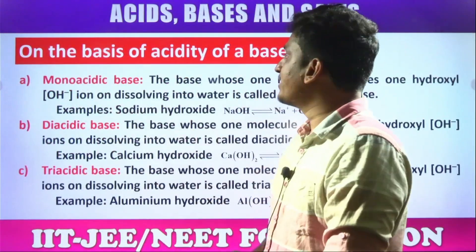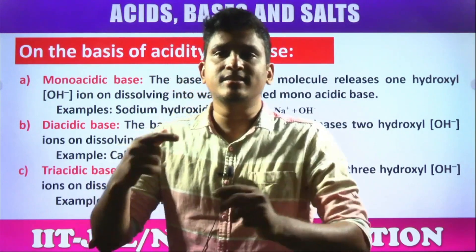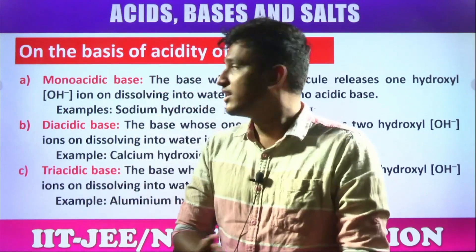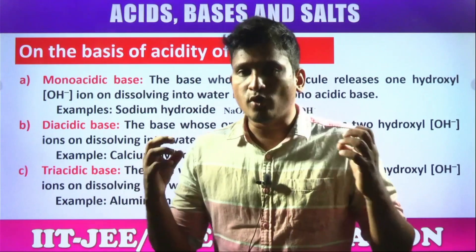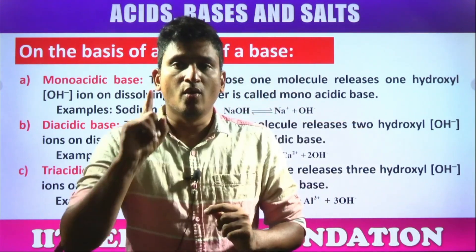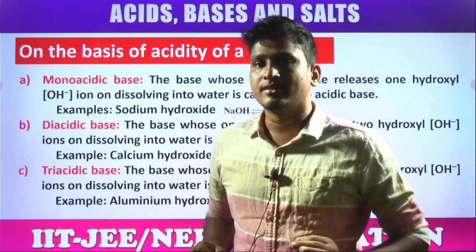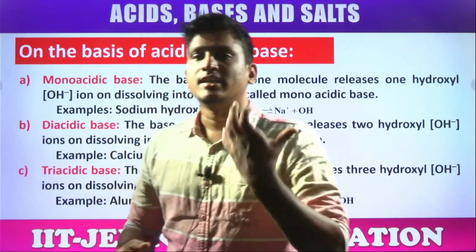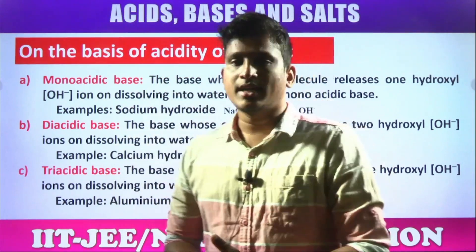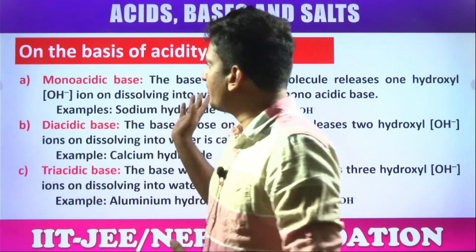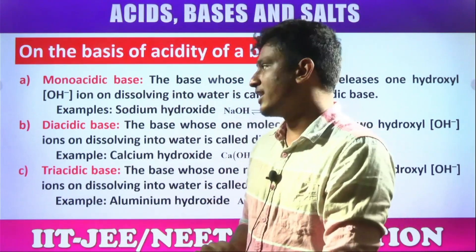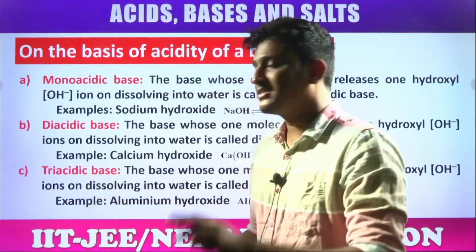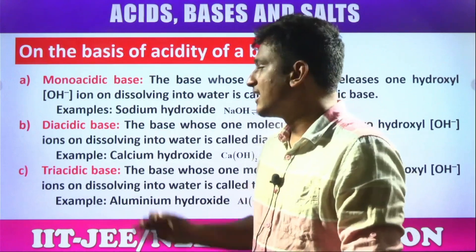On the basis of acidity — for acids we have basicity. The number of OH⁻ ions released by one molecule of a base is called acidity. We have monoacidic base, diacidic base, and triacidic base. A base which can release only one OH⁻ ion is monoacidic; two OH⁻ ions is diacidic; and three OH⁻ ions is triacidic.